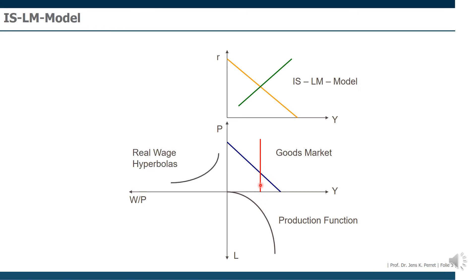Then in the upper left, we can include the real wage hyperbolas. What does this mean? Well, we can differentiate between nominal wages. That's basically what you see in your account every month. That's here the large W.